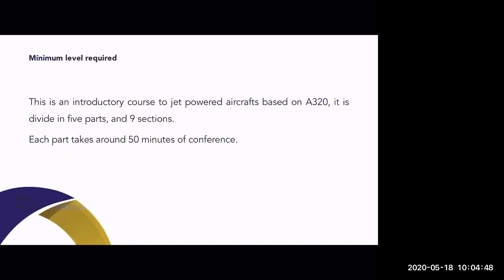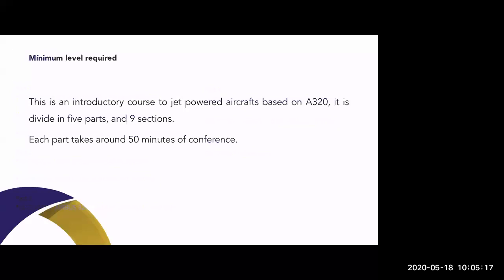In Part One, we find three sections: Section One — jet and propeller differences; Section Two — jet aircraft aerodynamics; Section Three — performances affecting jet aircraft. This first part covers generic concepts for all jet airplanes, such as the Boeing 737 and A320. After this, we get into the A320 systems part, which is more focused specifically on A320 systems.